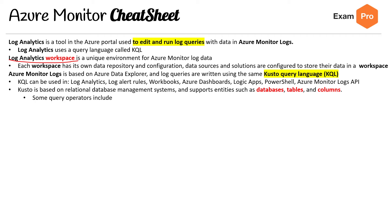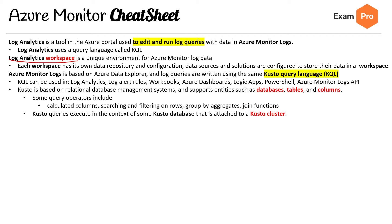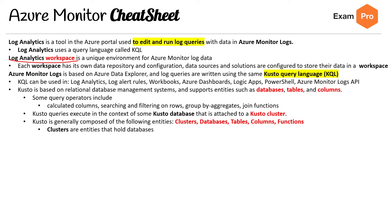Kusto is based on a relational database management system, so you'll see databases, tables, and columns. Query operations include calculating columns, searching and filtering on rows, group by, aggregates, and join functions — similar to SQL. Kusto queries execute in the context of a Kusto database attached to a Kusto cluster. Kusto is generally composed of the following entities: clusters, databases, tables, columns, and functions.